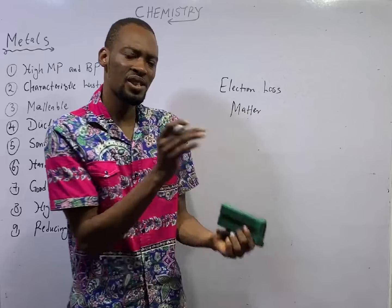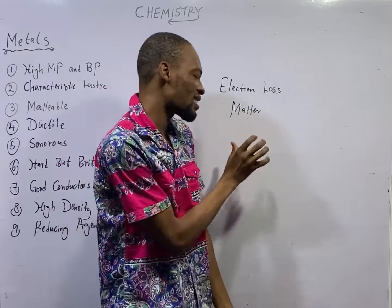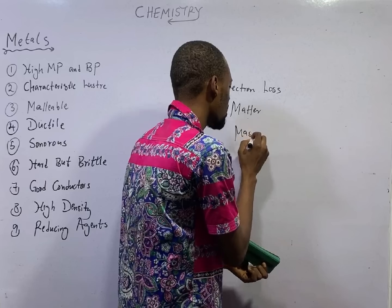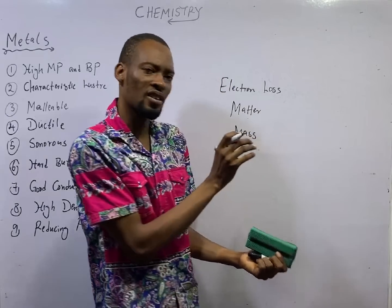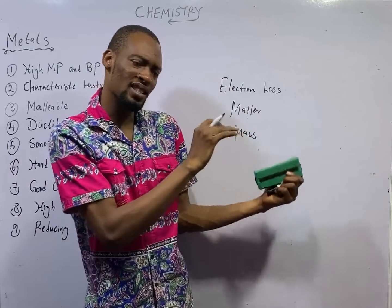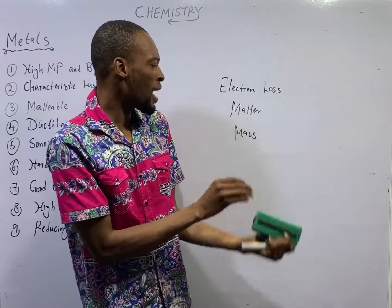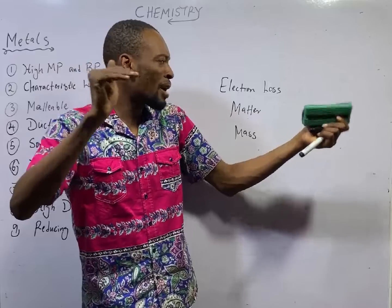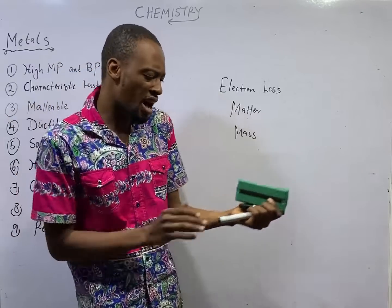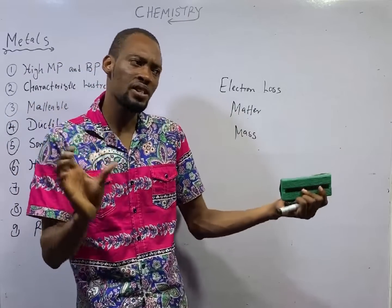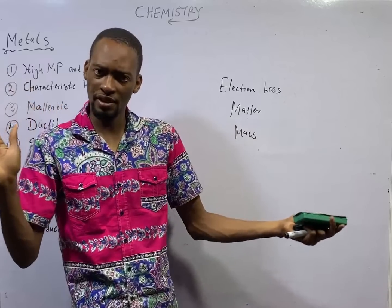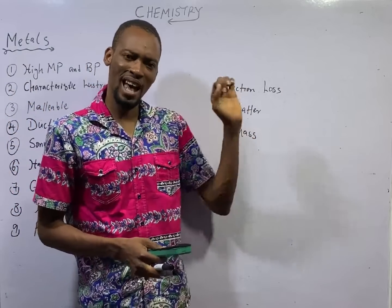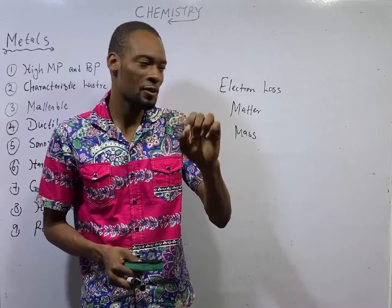Matter is anything that has mass and occupies space. Mass is the quantity of matter or amount of substance in a body. Mass does not change — anywhere you take an object to, the mass will remain constant. However, depending on gravity, the weight of objects varies. Weight is mass times acceleration due to gravity.